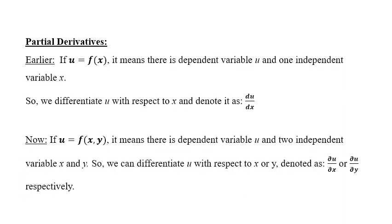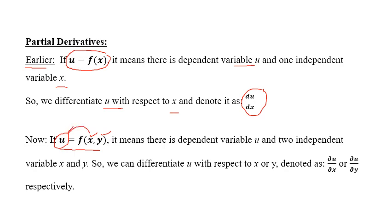Earlier, if u is a function of variable x, then u is the dependent variable and x is the independent variable, and we differentiate u with respect to x as du/dx. Now, if u is a function of two independent variables x and y, you can differentiate u with respect to x or y. When differentiating partially, we use the curly notation: ∂u/∂x and ∂u/∂y, not du/dx or du/dy. This is the basic difference in notation.